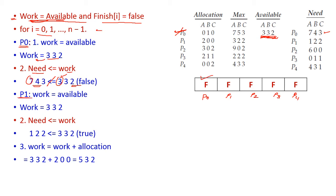Now let us try process P1. Work equals available = [3, 3, 2]. We check whether Need[P1] is less than or equal to Work. The need for P1 is [1, 2, 2], which is of course less than [3, 3, 2]. So we can execute P1 successfully — Finish[P1] is set to true. The allocated resources for P1 [2, 0, 0] are released and added into Work: 2 + 3 = 5, so Work becomes [5, 3, 2].